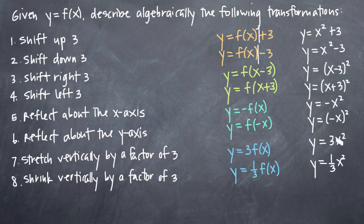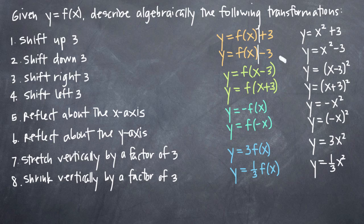And we won't take the time to do it here but if you started with the function x squared and you graphed all of these transformations, you would see visually how the graph would get shifted up 3 units, down 3 units, to the right, to the left, etc.